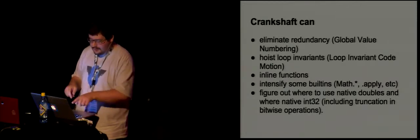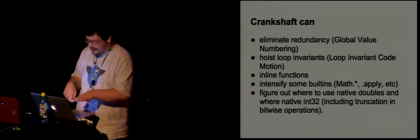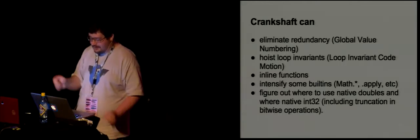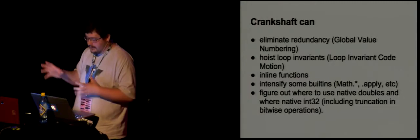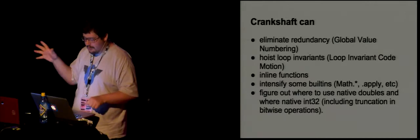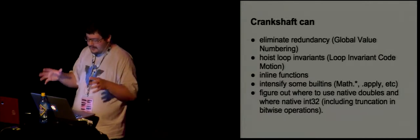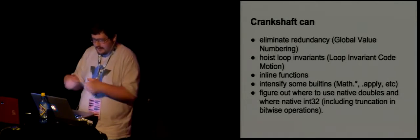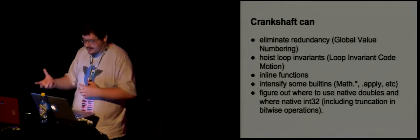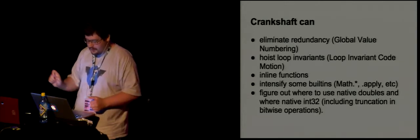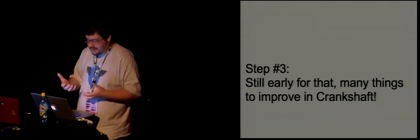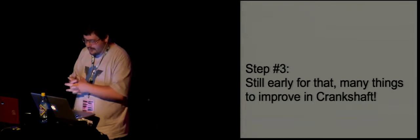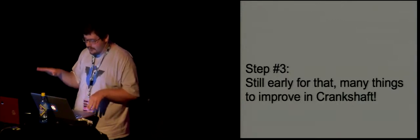Crankshaft can intrinsify some built-ins in JavaScript — all Math functions will be converted to efficient assembly code. It understands the semantics of some heavy operations like foo.apply: if it knows that foo is a function, it can make the call direct or even inline it and completely eliminate the application. It can also figure out where to use native doubles and where these doubles contain only int32s, so it can use int32s efficiently. Where we go from here is not clear yet, because there are a lot of things still not done in Crankshaft — not all operations of JavaScript are supported. If you use with, it will just say no and not optimize the function. There are a lot of things to do in Crankshaft itself before starting to think about the next big step like global analysis.